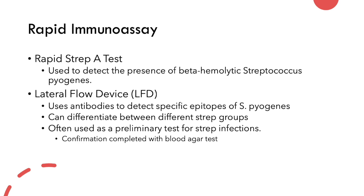The rapid immunoassay test is known as a lateral flow device, and it's based on ELISA — an enzyme-linked immunosorbent assay. The rapid strep A test that we run in our laboratory is used specifically to detect the presence of beta hemolytic Streptococcus. A lateral flow device is a form of ELISA; it's very small and uses antibodies to detect specific epitopes of Strep pyogenes — the antigens.